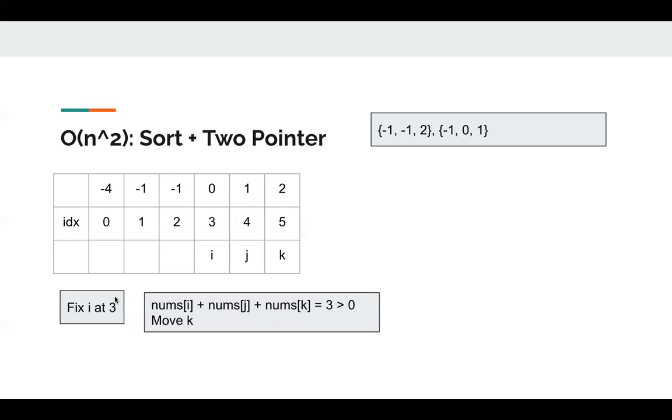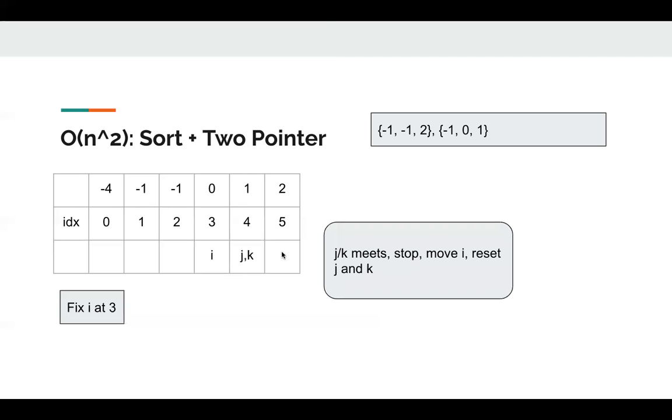So we can fix i as three. And we set j and k. And we find sum is three, which is greater than zero. So we just move k. And we can also stop since j and k meet. Then we can reset i. At this point, there's no meaning to run this algorithm since there are at most two elements left. So we can just stop.